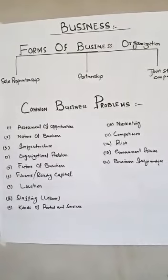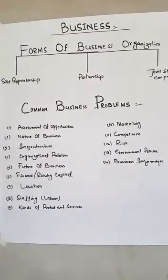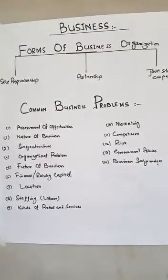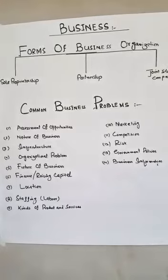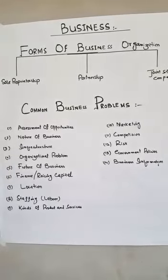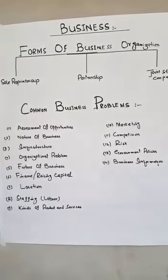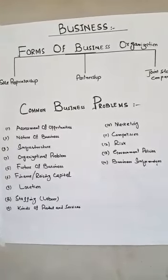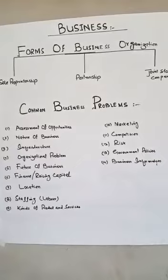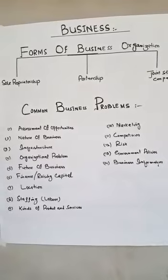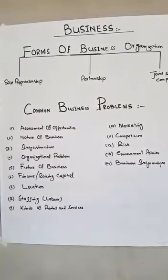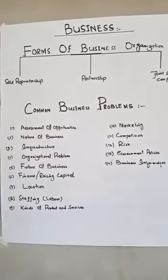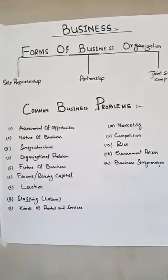Number nine is kinds of products and services. This is concerned with the products offered to the general public on the basis of color, design, price, and quality of the product.